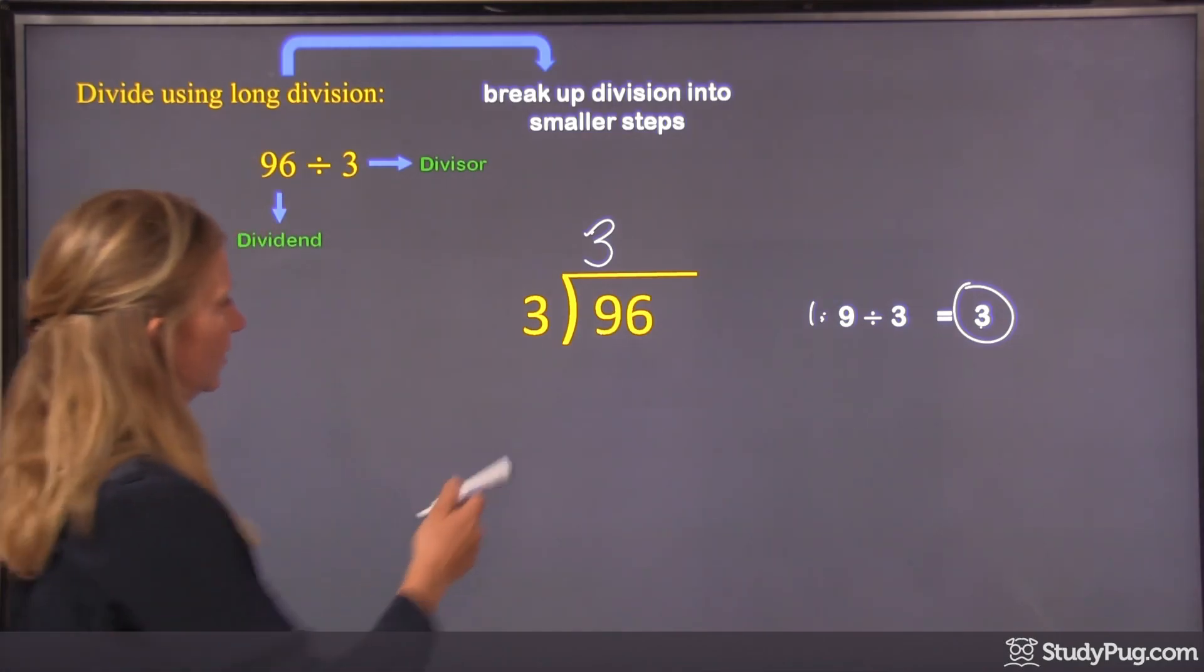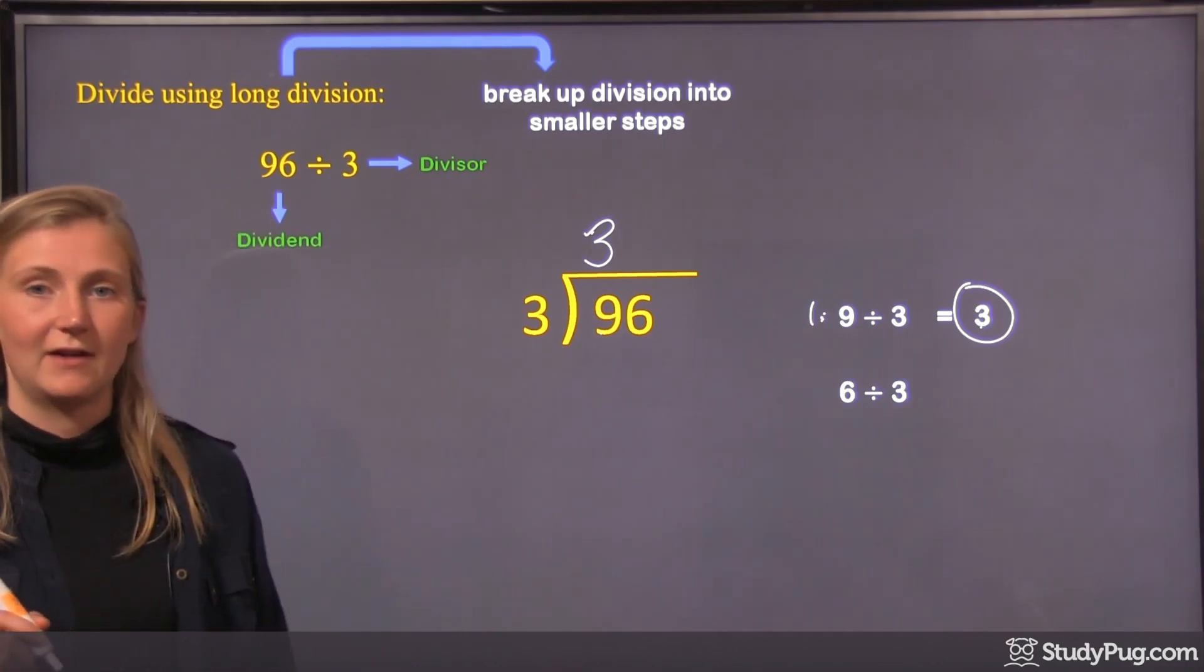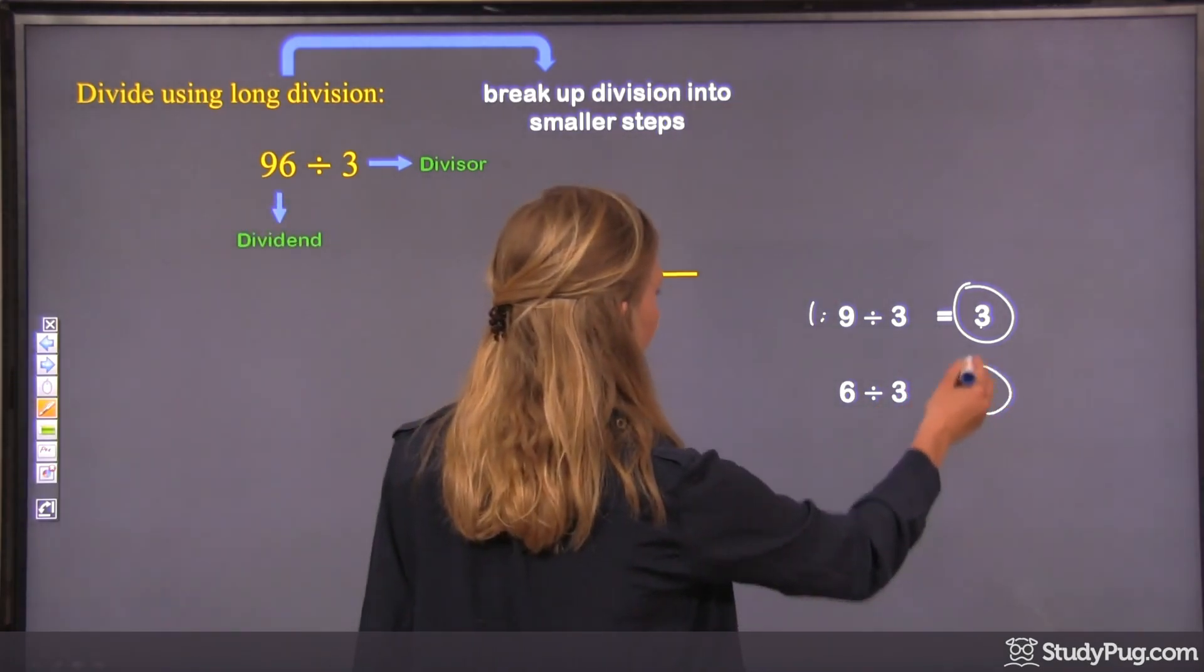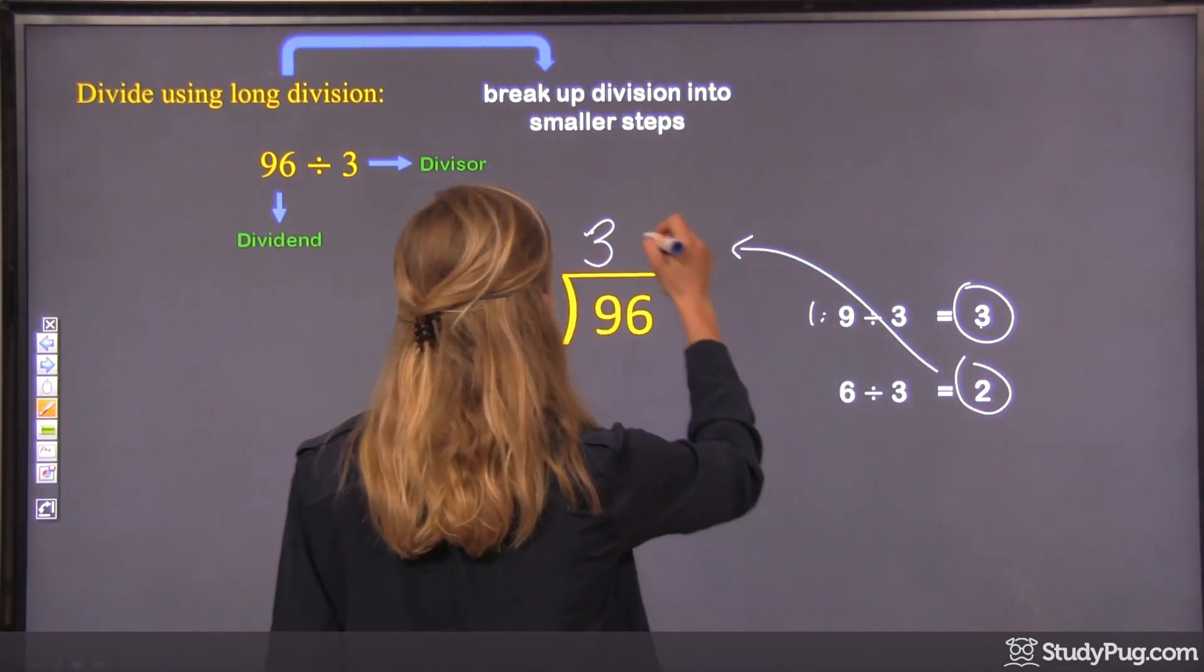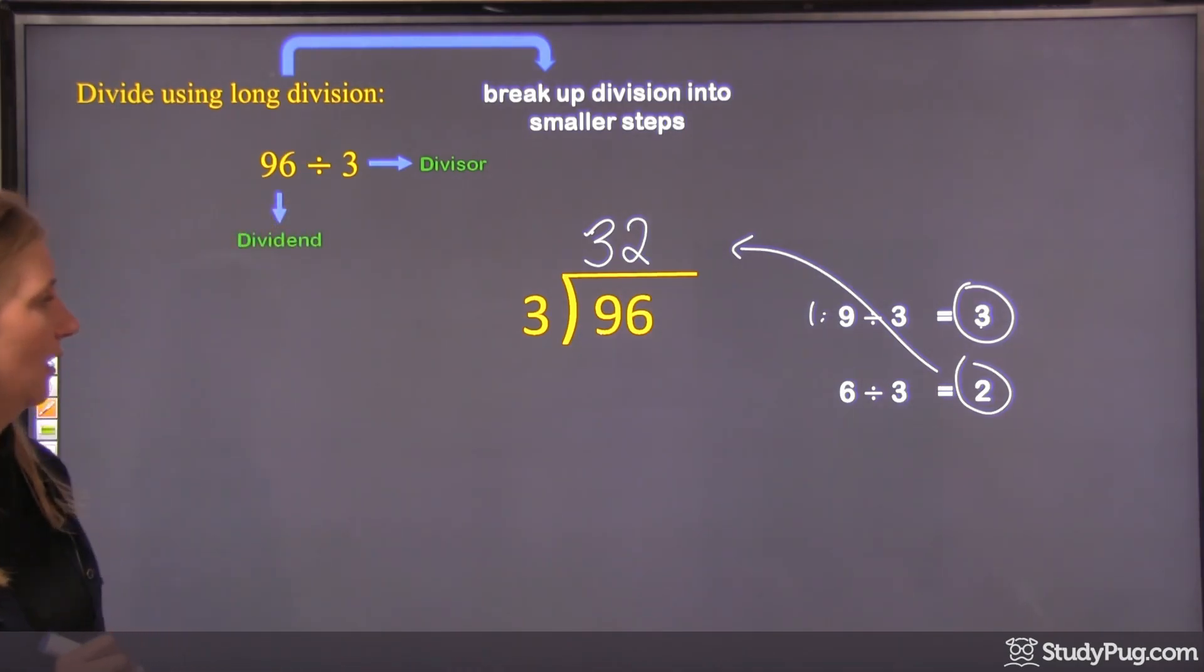All right? Okay, second step is going to be 6 divided by 3. 6 divided by 3 is 2, right? So this 2 is going to go up here like that, right above the 6.